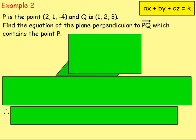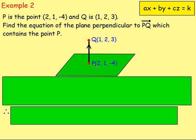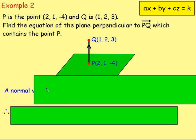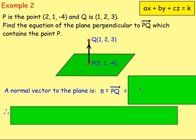Example 2: P is the point (2, 1, negative 4) and Q is (1, 2, 3). Find the equation of the plane perpendicular to PQ which contains point P. Let's do a little sketch: we have a plane containing point P at (2, 1, negative 4), and we draw Q just above P. We can see that PQ will be perpendicular to the plane. So the normal vector n is going to be PQ.